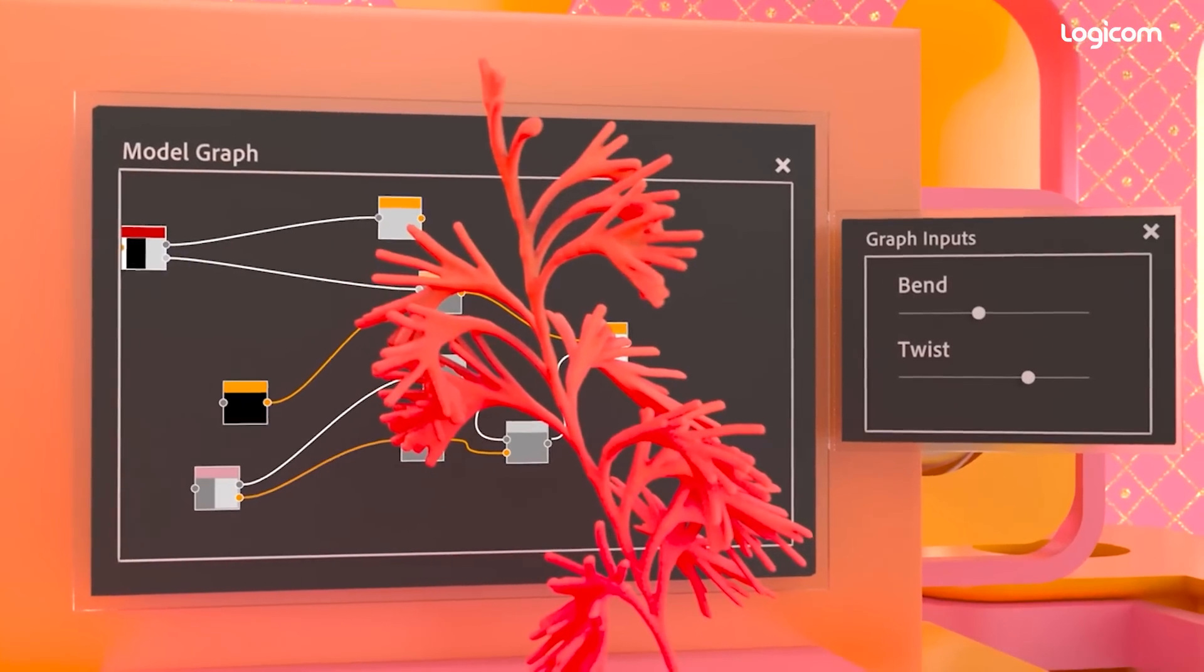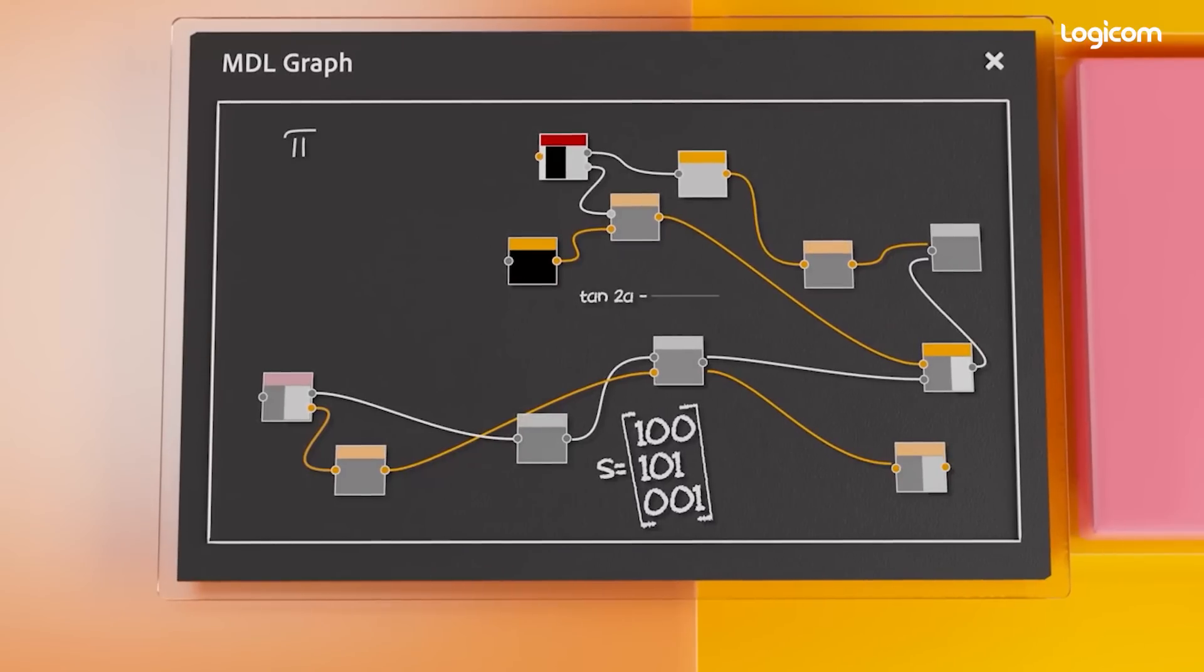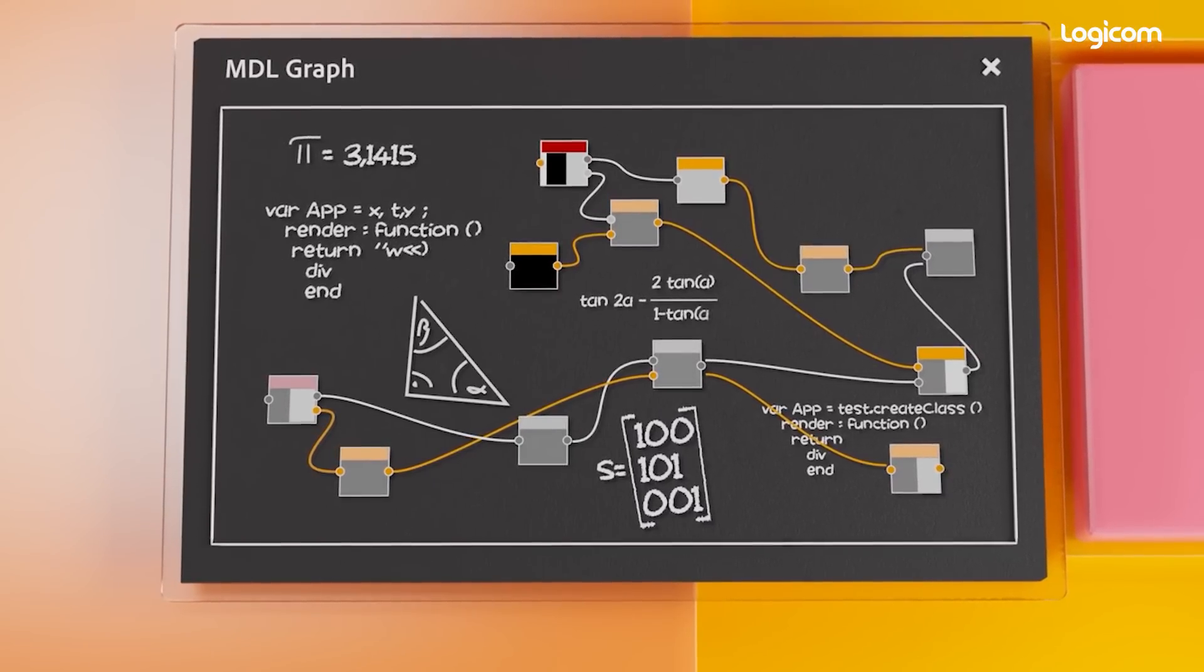Then, Substance models are graphs that let you create parametric 3D models. And going even deeper, you'll find graphs for MDL shaders and mathematical functions.